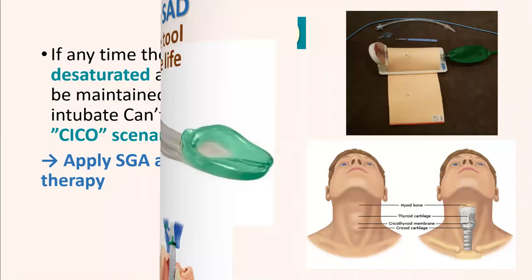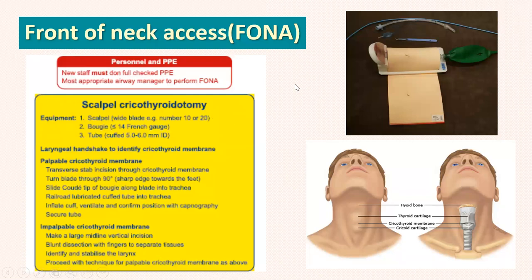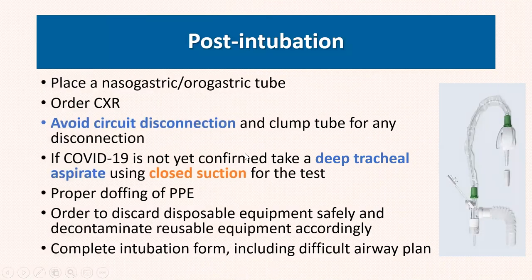Front-of-neck access — Plan D — requires simply a bougie, a size 5-6 tracheal tube, and a scalpel size 10 or 20 to perform a scalpel cricothyroidotomy. Define the cricothyroid membrane ideally during initial airway assessment; if needed, use ultrasound to locate it. Make an incision, insert the bougie, and slide the tube over the bougie — saving the patient's life and maintaining oxygenation.